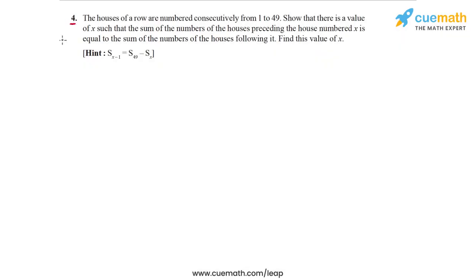Here's what question 4 of this exercise says: The houses of a row are numbered consecutively from 1 to 49. Show that there is a value of x such that the sum of the numbers of the houses preceding house number x is equal to the sum of the numbers of the houses following it, and find this value of x.